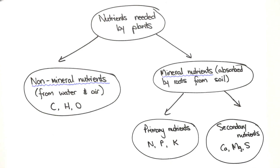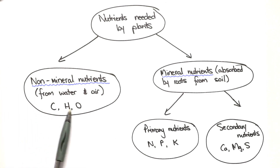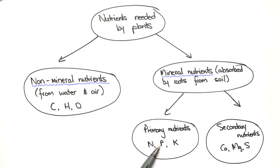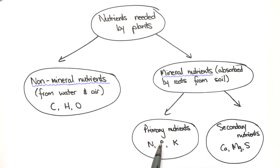As mentioned, the non-mineral nutrients are from water and air — carbon, hydrogen and oxygen — and the mineral nutrients are absorbed by the roots from the soil. The primary nutrients are nitrogen, phosphorus, potassium — just remember NPK. And then the secondary nutrients are calcium, magnesium and sulfur. We do not need to learn anything about these three, but we need to know quite a bit about nitrogen, phosphorus and potassium.